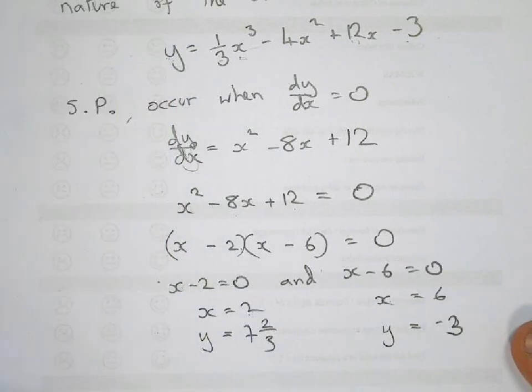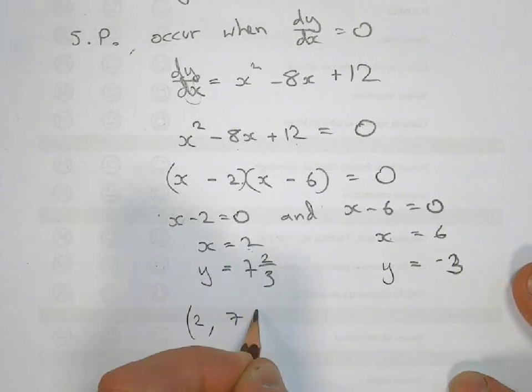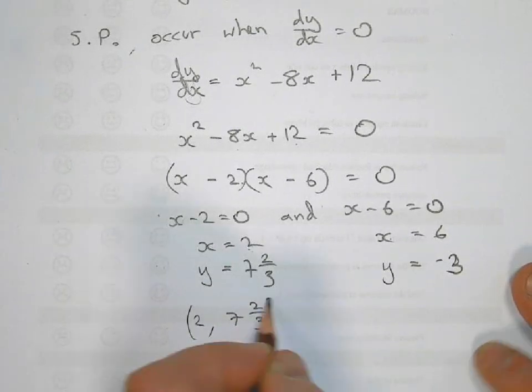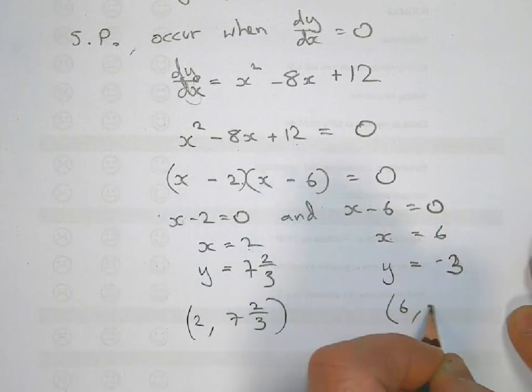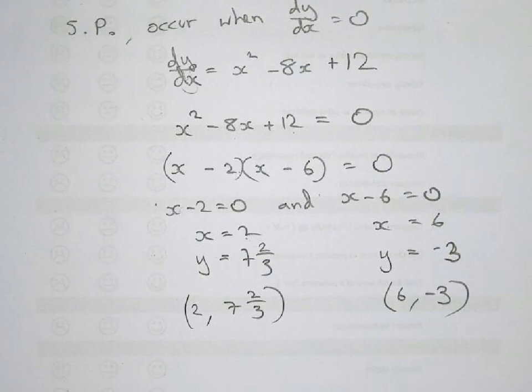So our two turning points are: x is 2 and y is 7 and 2 thirds, and x is 6 and y is minus 3. Any questions on that?